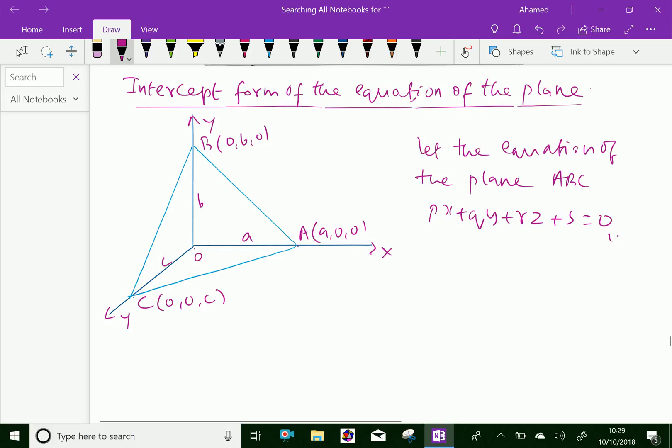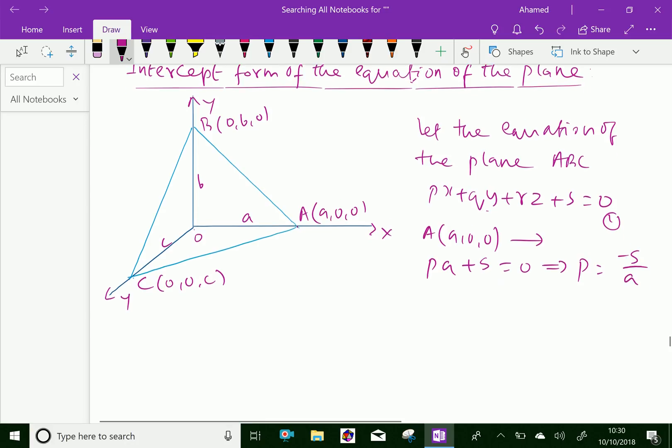Let it be equation 1. Then substitute the point A. A is A, 0, 0. Because the point A lies on it, we can put the point A in equation 1, that is P times A plus S, because Q times Y and R times Z are 0. Therefore, P times A plus S equals 0, which gives P equals minus S over A.